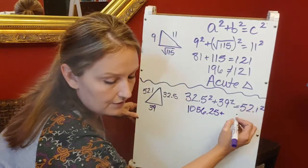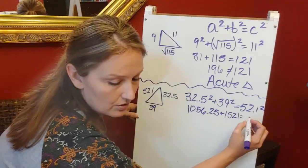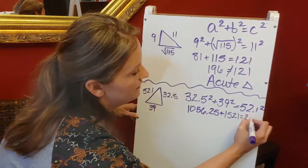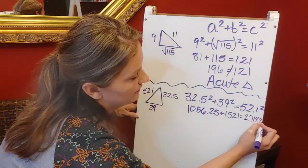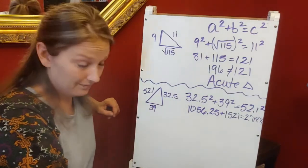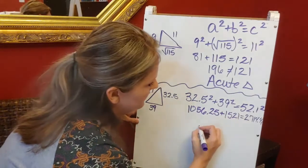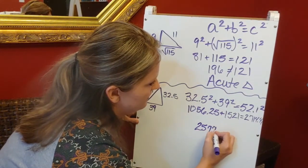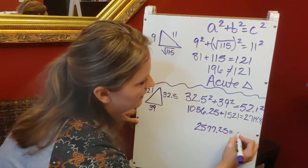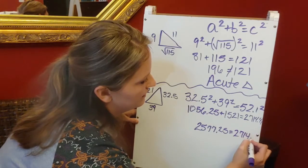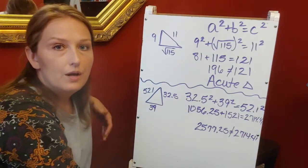39² is 1521, and 52.1² is 2714.41. If I add the left side, I get 2577.25.